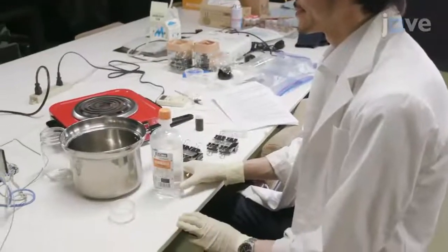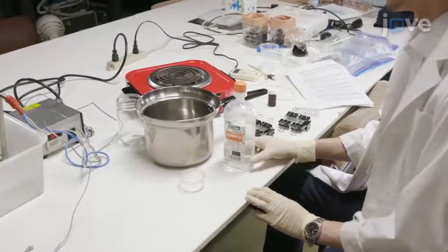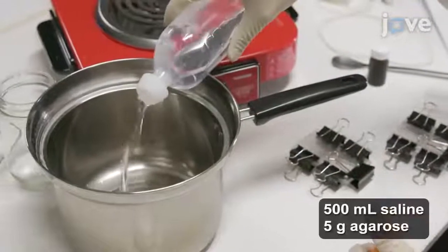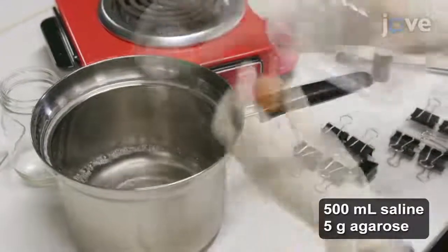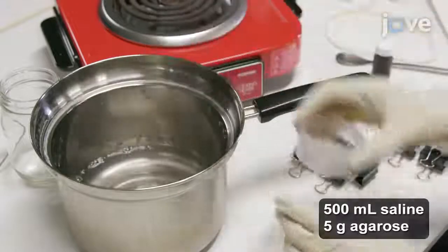Producing the base material requires saline solution and agarose powder. Put 500ml of saline in a pot, then stir while slowly adding 5g of agarose.